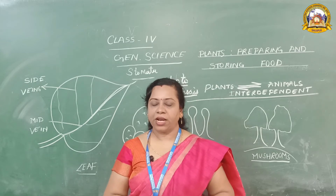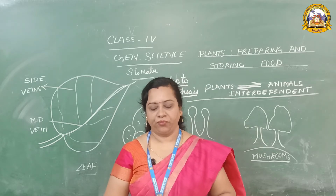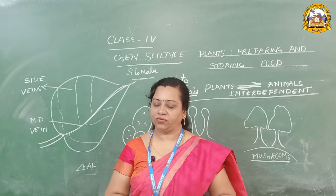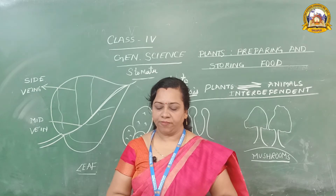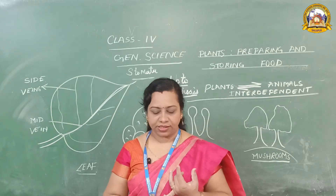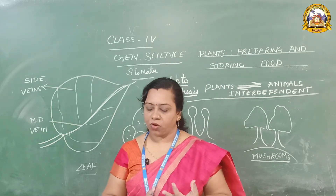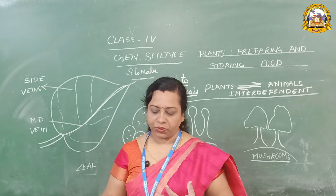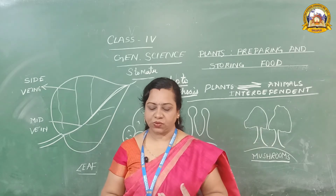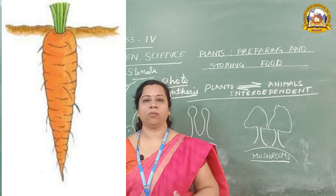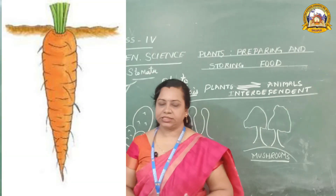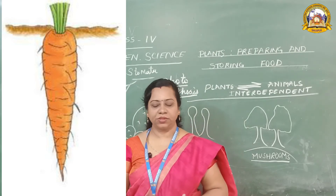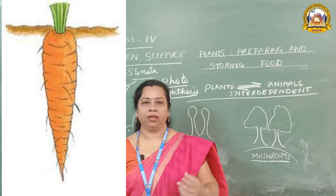Now, plants are preparing food. What is the use of this food? It is used to get energy. Some of it is used for growth. And extra food is stored in the form of starch in leaves, in stems and roots.